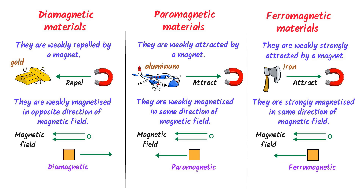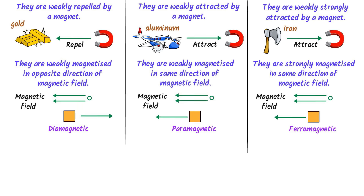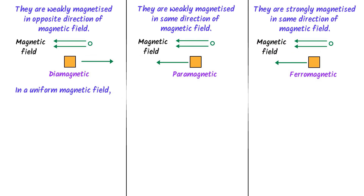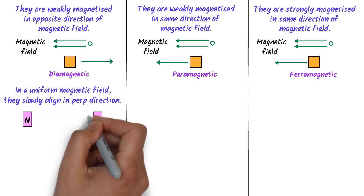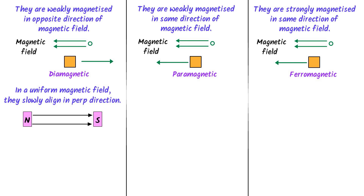Thirdly, when a diamagnetic rod is freely suspended in a uniform magnetic field, it slowly aligns itself in a direction perpendicular to the applied magnetic field. For example, if the magnetic field is in this direction, the diamagnetic rod will slowly align itself in a perpendicular direction.